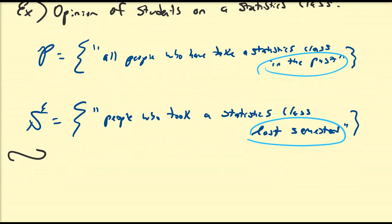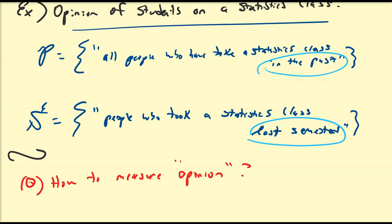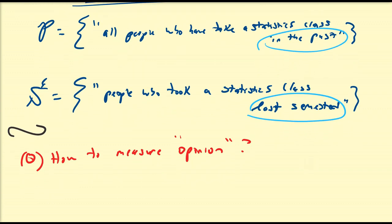A question that one should answer is the following. How to measure opinion? This is our study that we're interested in. We're interested in understanding the opinion of students on a statistics class. We've identified our population, we've identified a potential sample that maybe we can pull from. We might not be able to get all the students who took a statistics class last semester, but we might be able to get a little handful.